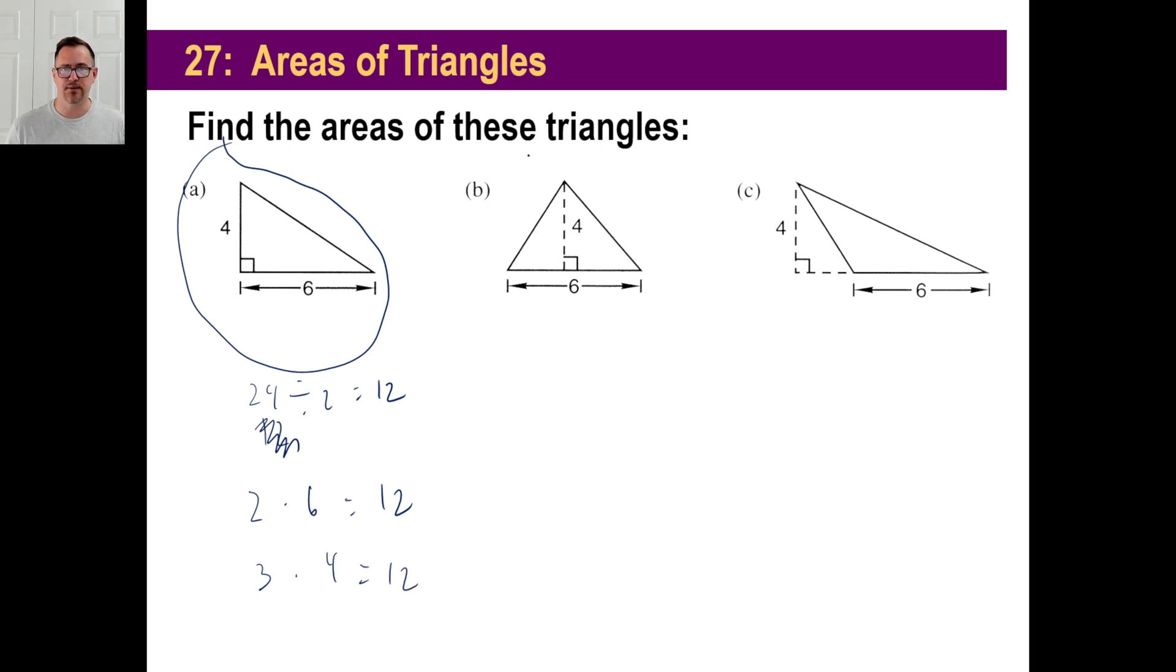Okay, now let's look at B. B looks completely different from A. It's not the same kind of triangle. We'll talk about types of triangles later. But what is the base of this triangle? 6, right? Okay. The height? 4. We don't care about anything else. It's still going to be 6 times 4 divided by 2. That's all there is to it.